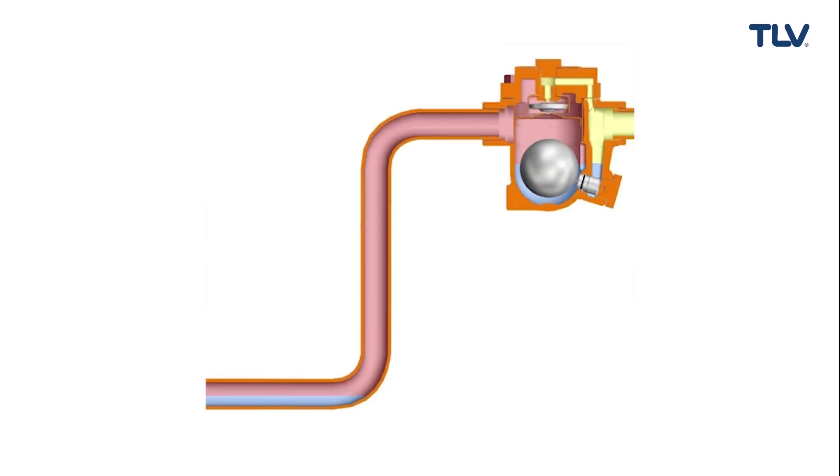Steam locking is a condition that occurs when steam enters the trap in front of condensate and shuts off the trap valve, preventing condensate discharge.